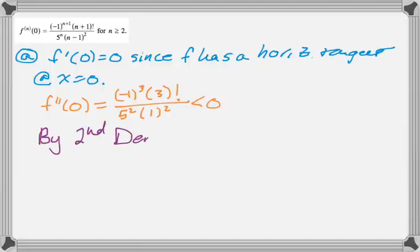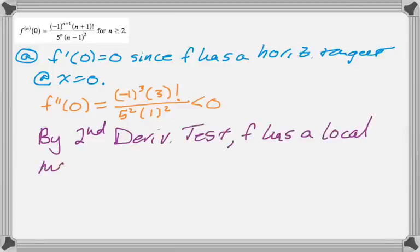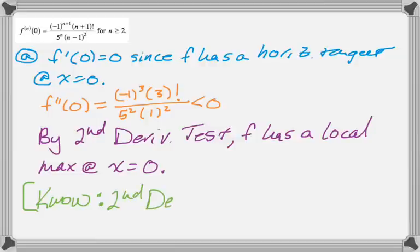And then we can say by the second derivative test, we know for a fact that f has a local maximum. That's because it's concave down and has a horizontal tangent line, in case you don't remember. But I would definitely recommend that you know the second derivative test. It comes up a lot with series questions, because you can figure out the first derivative and the second derivative from the series or from the things that you're given.